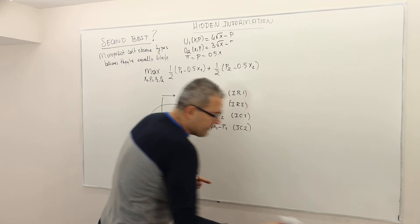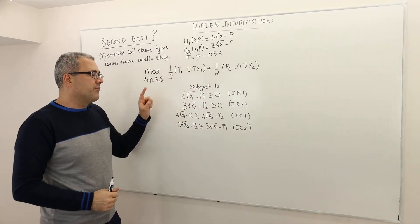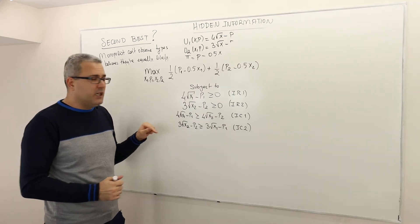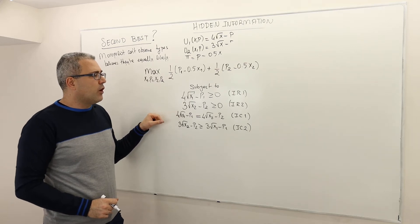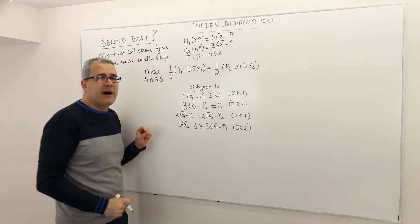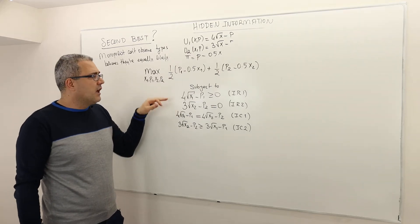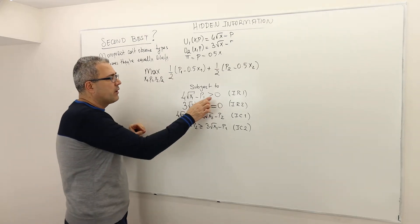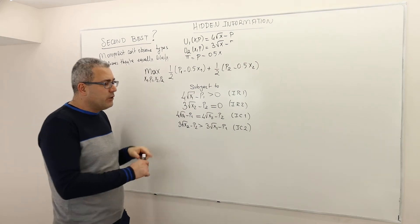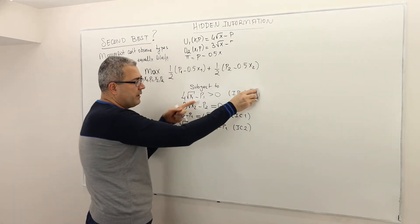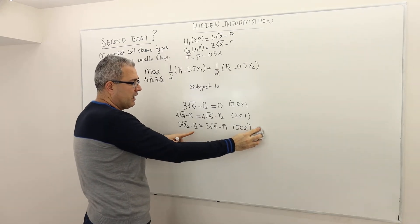In the previous episode, we argued that the incentive compatibility constraint of the highest type — in our case, type 1 — has to be binding, meaning it's going to hold with equality. And given that IR2 and IC1 are binding, IR1 and IC2 will be satisfied with strict inequality.